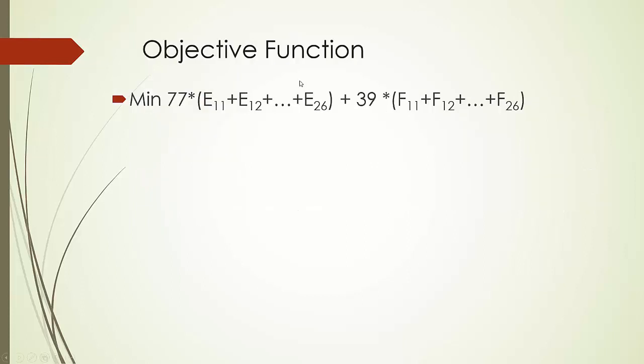We would like to minimize the total employment cost from the perspective of the university. And we know that for each one 8-hour staff member, it costs us $77. But how many 8-hour people we are going to need? It's going to be nothing but the sum of E_11, E_12, all the way to E_26. There will be 12 of them.